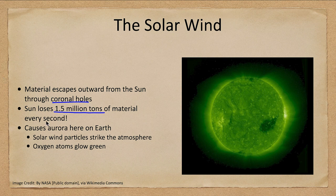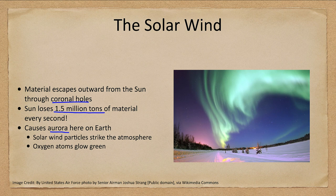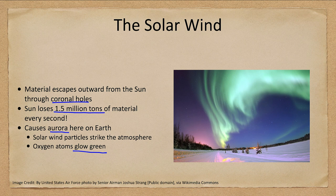The solar wind causes the aurora here on Earth. Solar wind particles strike the atmosphere, causing oxygen atoms in the upper atmosphere to glow. Oxygen gives a distinct green glow, much as hydrogen gives a distinct red glow. These are often called the northern or southern lights because they are visible at very far northern or southerly latitudes. That's because the particles are funneled along the magnetic field and strike Earth's atmosphere where those magnetic field lines enter, near the north and south magnetic poles. Large storms can push the aurora visible a bit further toward the equator.